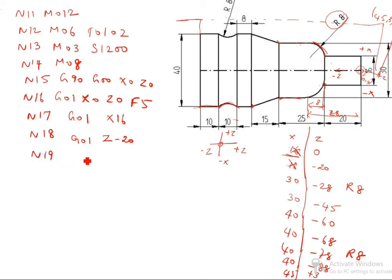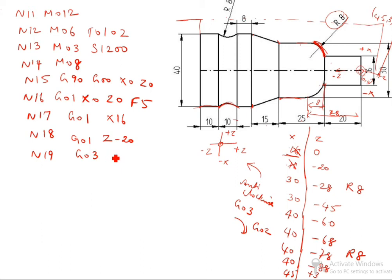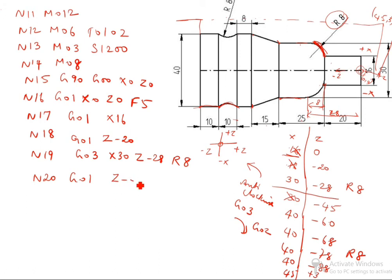N19: You see this portion is on the upside, so upside is anti-clockwise. Anti-clockwise means G03. Clockwise means G02. So we can write G03, X30, Z minus 28, R8. After that N20: G01, Z minus 45. 30 is already written, so don't write it again — just Z minus 45.